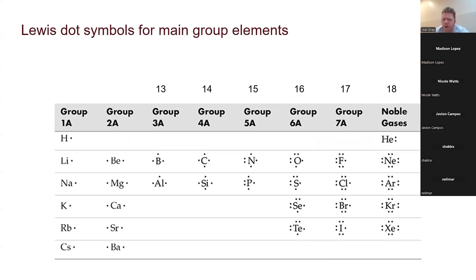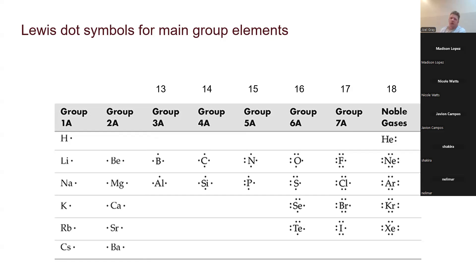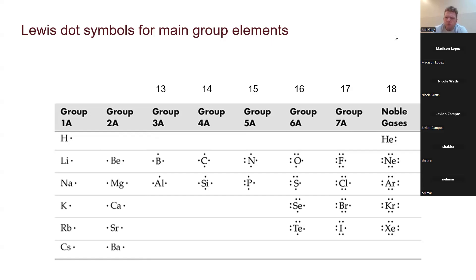What you have to account for is that each of the electrons is going to occupy a certain amount of space. In addition to that, those electrons are going to repel one another, and as they repel one another, they're going to occupy different amounts of space. So if we look at something like the Lewis structure for helium...